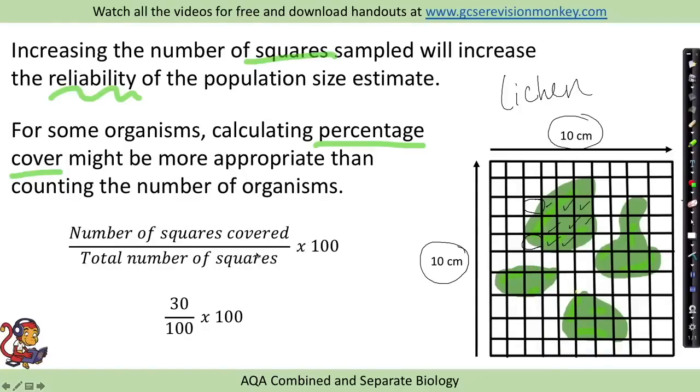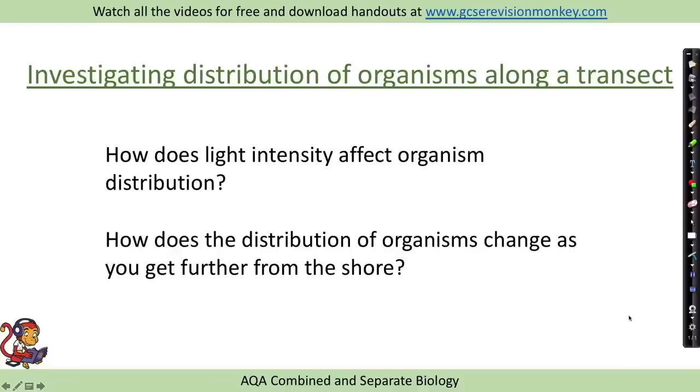When we've got this, we use the equation: number of squares covered divided by total number of squares times 100, and this gives us our percentage cover. If I've estimated that 30 squares in total are covered by the lichen, and there are 100 squares on the grid, then 30 divided by 100 times 100 will give us an answer of 30 percent coverage.